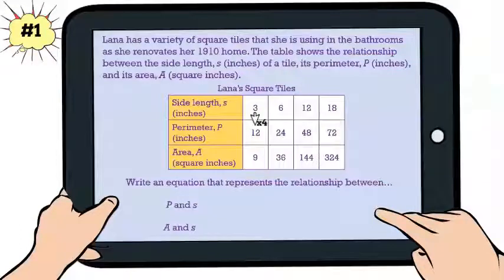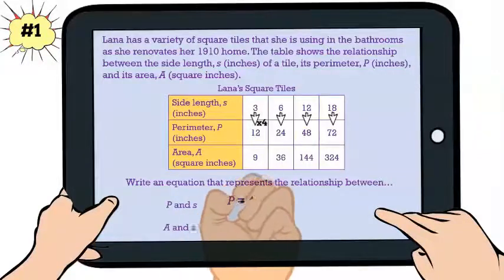I know that 3 times 4 gives me 12, but does that work for the other numbers? Yes it does. So our first equation is P = 4S.